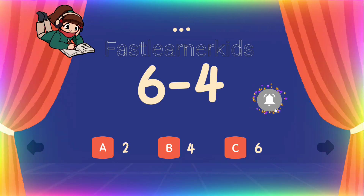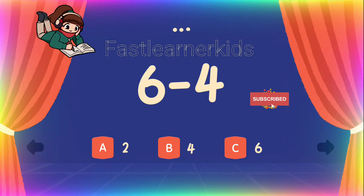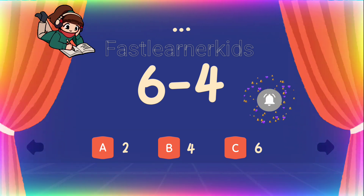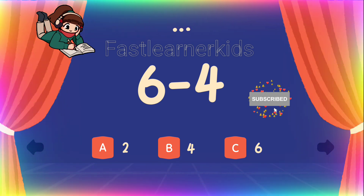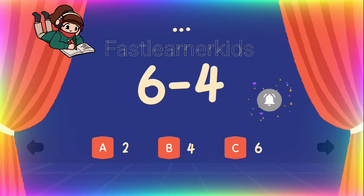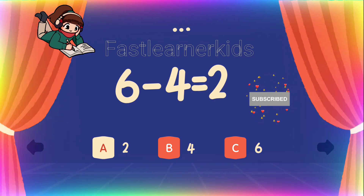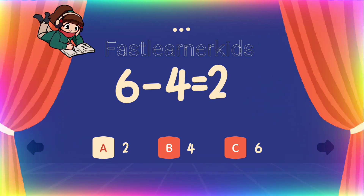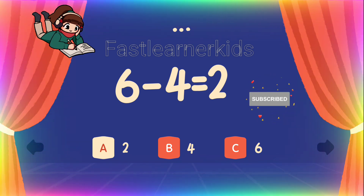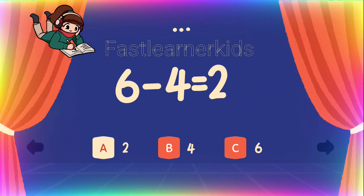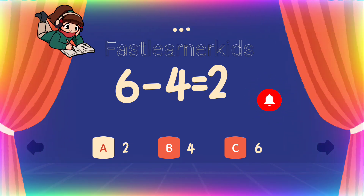6 minus 4. 6 minus 4 is equals — is it a? Number 2. Is it b? Number 3. Is it c? Number 6. The correct answer is a: number 2. 6 minus 4 equals 2. When you take 4 mangoes out of 6 mangoes, what is that? It's 2. 6 minus 4 equals 2.